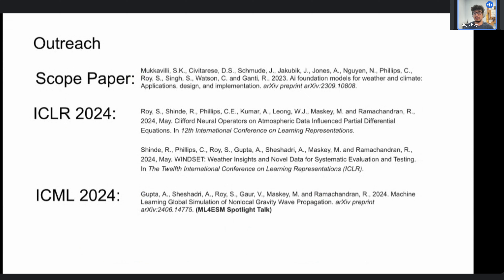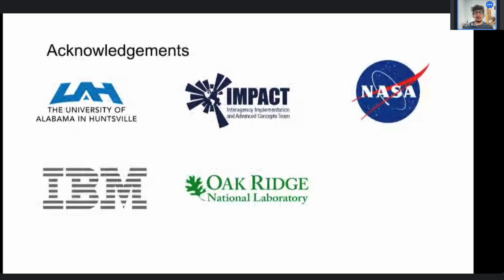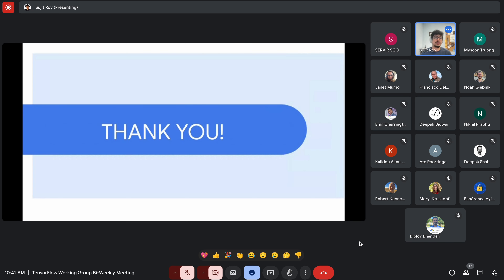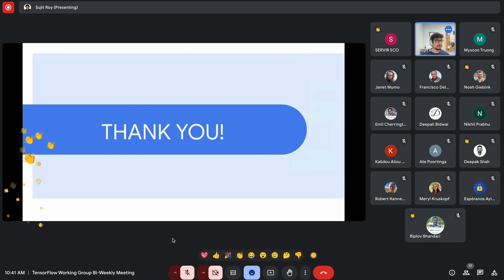Importantly, all of these results were zero-shot — the model was not fine-tuned for any of these approaches; it was just provided initial conditions and forecasted. Several papers have been published: a scope paper on arXiv, a paper presented at ICLR, and a recent ICML workshop spotlight paper on gravity wave propagation. Partners include NASA IMPACT, IBM, ORNL, Clark University for the GeoFM, and Stanford for gravity wave parametrization.